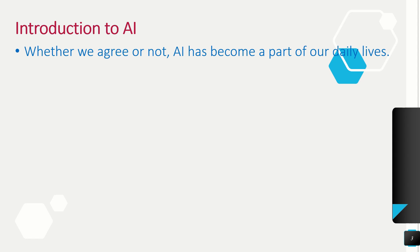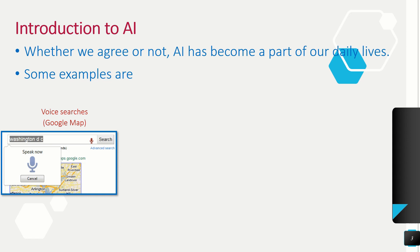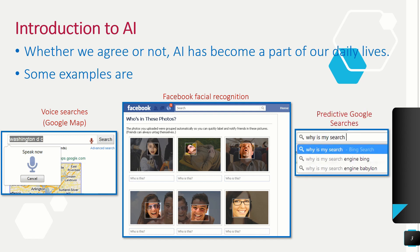Whether we agree or not, AI has become a part of our daily lives. For example, AI helps us to navigate to our destination with the help of Google Maps, identify a person or an image in Facebook, and predict the word that we are going to type in Google searches. These are some of the common examples of AI in our day-to-day lives.